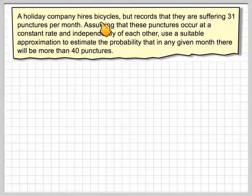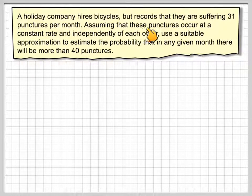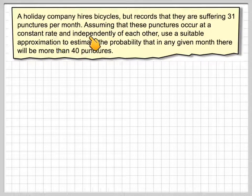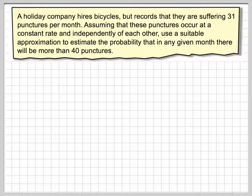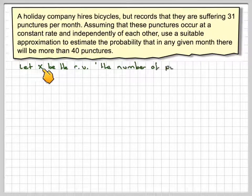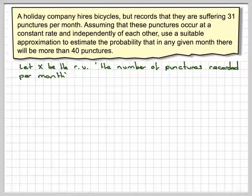A holiday company hires bicycles but records they are suffering 31 punctures per month. Assuming that these punctures occur at a constant rate and independently of each other, use a suitable approximation to estimate the probability that in any given month there will be more than 40 punctures. So let X be the random variable of the number of punctures recorded per month.